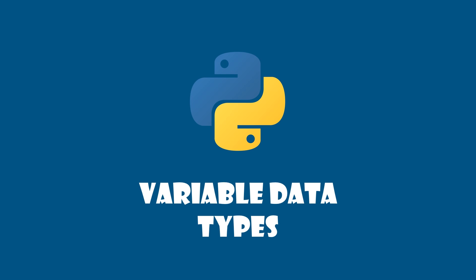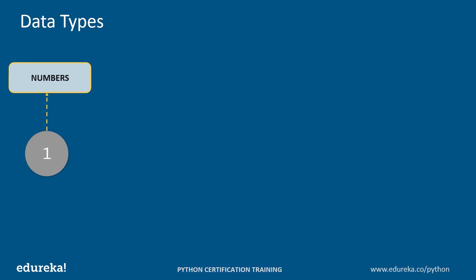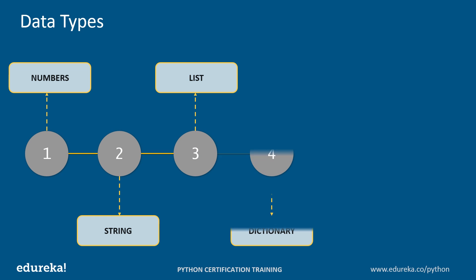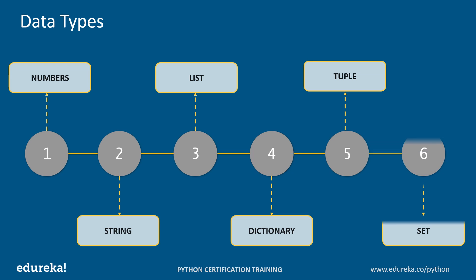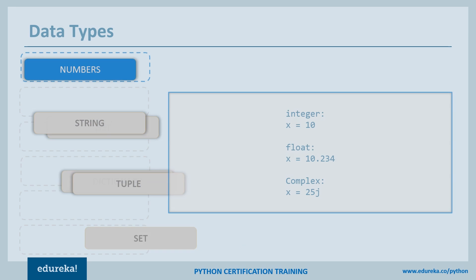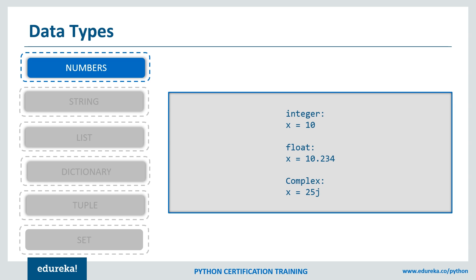Now let's move on to variable data types. Depending on the properties they possess, there are mainly six data types in Python: numbers, string, list, dictionary, tuple, and set — plus range. Numbers or numerical data types have four subtypes: integer, float, complex, and Boolean. Integer takes whole number values without a decimal point. Adding a decimal point makes it float. For complex, we use J as the imaginary part. Boolean returns only true or false.